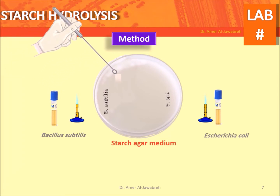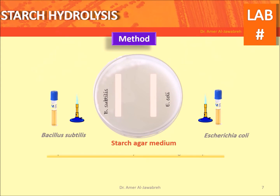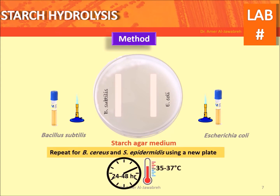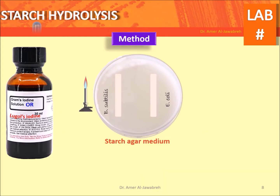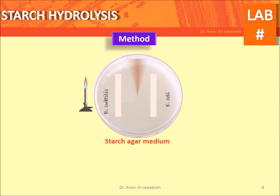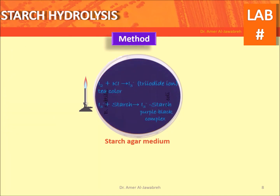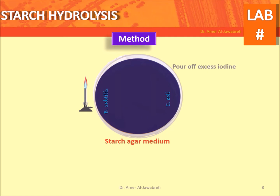Method: draw a streak line of each test bacteria — two lines per plate — label, and incubate at 35 degrees Celsius for 24 to 48 hours. Then flood the plate with Gram's iodine or Lugol's iodine. Allow excess iodine to run off and read results within 30 seconds.